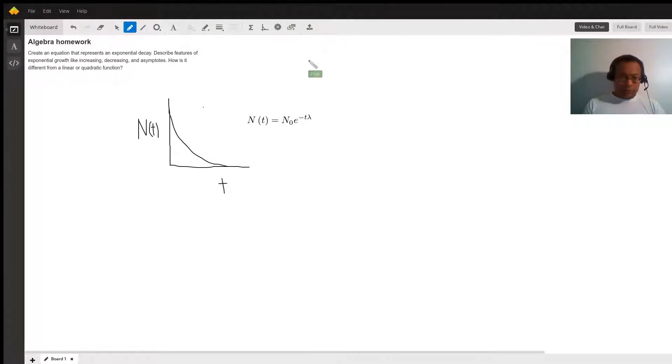Okay, the question is create an equation that represents exponential decay. As for the features of exponential growth like increasing, decreasing, the asymptotes, how does it differ from linear and quadratic equations? This is a typical equation for exponential decay.